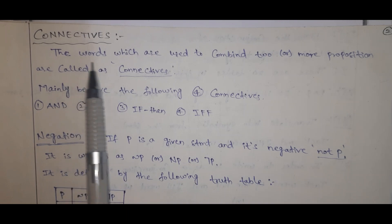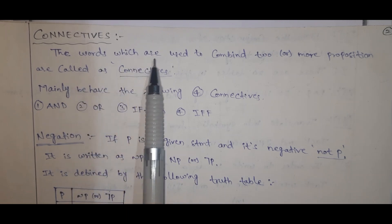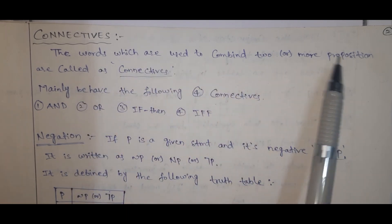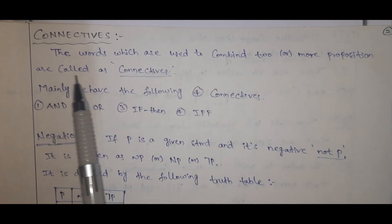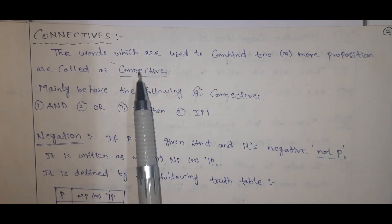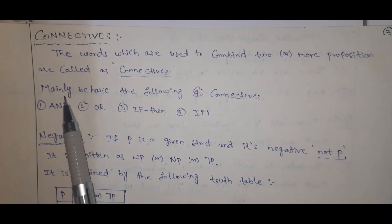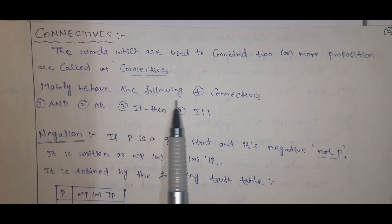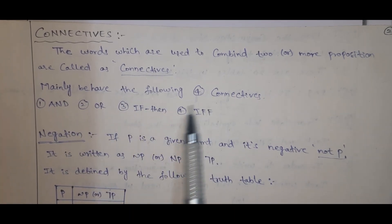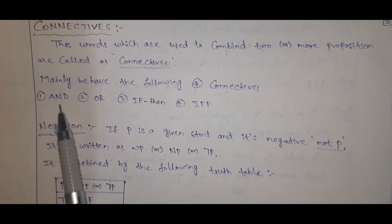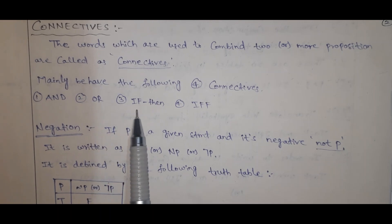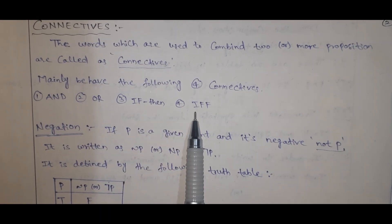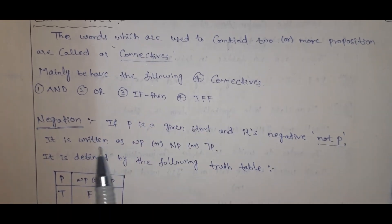The words which are used to combine two or more propositions are called connectives. We have the following four connectives: AND, OR, IF-THEN, and IF AND ONLY IF.